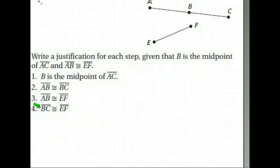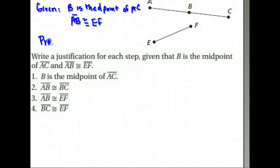So here is what they should put up here. Given, they need to give us a given: given that B is the midpoint of AC, and given that AB is congruent to EF.